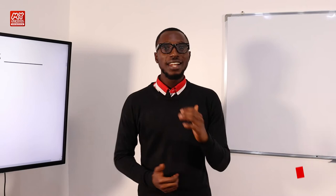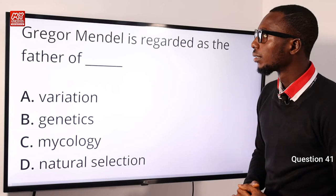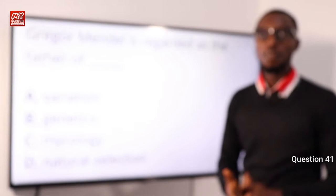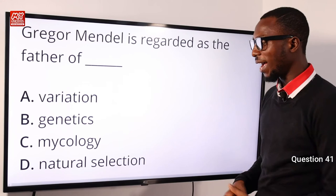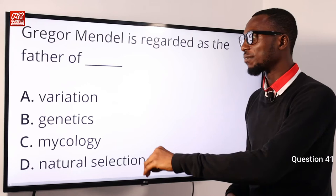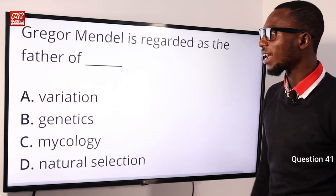Don't forget to hit the like button, click on the subscribe button, and tap on the bell notification so you can be informed as soon as we upload the next video. Question 41: Gregor Mendel is regarded as the father of genetics, using the pea plant. We have variation — morphological variation, physiological variation — and natural selection by Charles Darwin, and mycology. But the most viable option is option B: Gregor Mendel is the father of genetics.